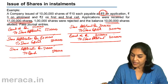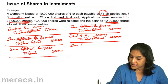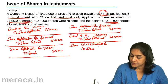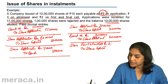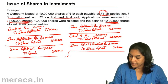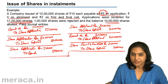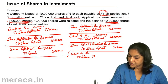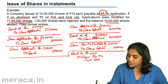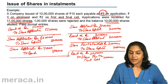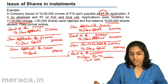Finally, the first and final call is made. When the call is due, the entry is: share first and final call account debit to share capital — amount being ₹2 per share on 10 lakh shares, that is ₹20 lakhs. When this money is received, the entry is bank account debit to share first and final call account — ₹20 lakhs.